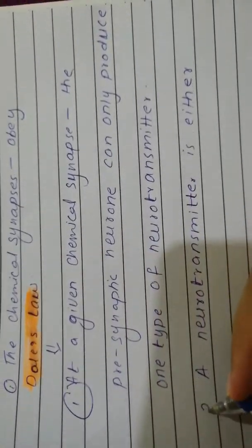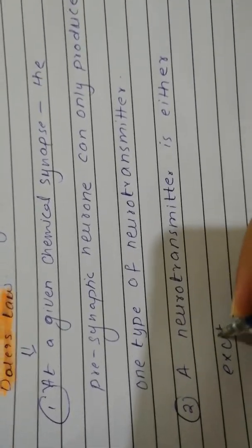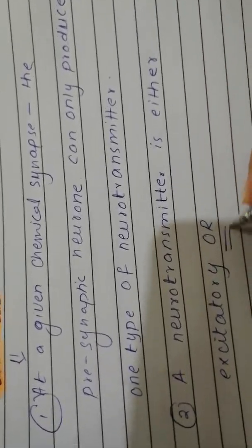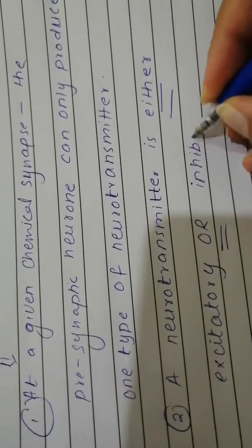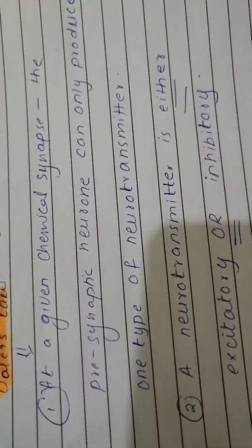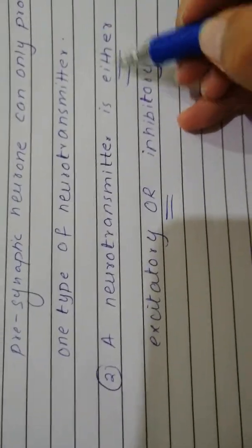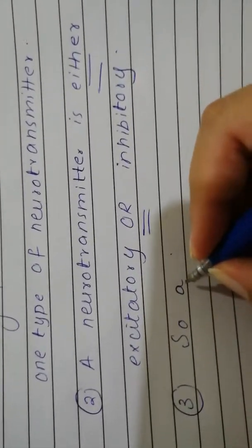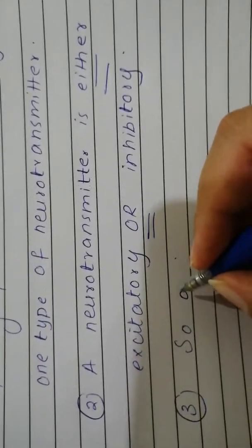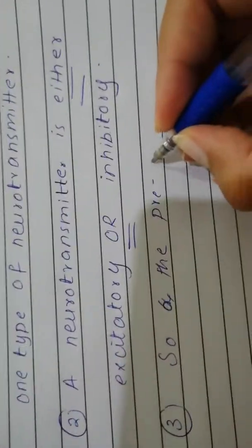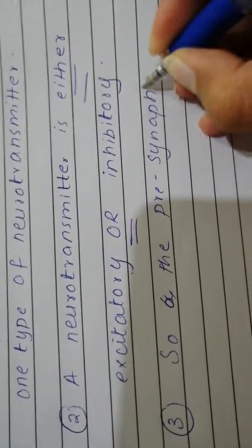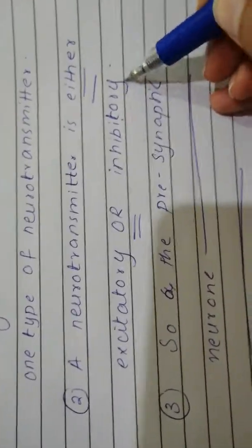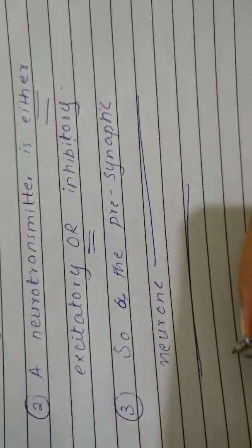That is point number one, and that is enough for at least a full mark on this part. The pre-synaptic neuron has either an excitatory or an inhibitory influence on the post-synaptic neuron with which it forms the synapse.